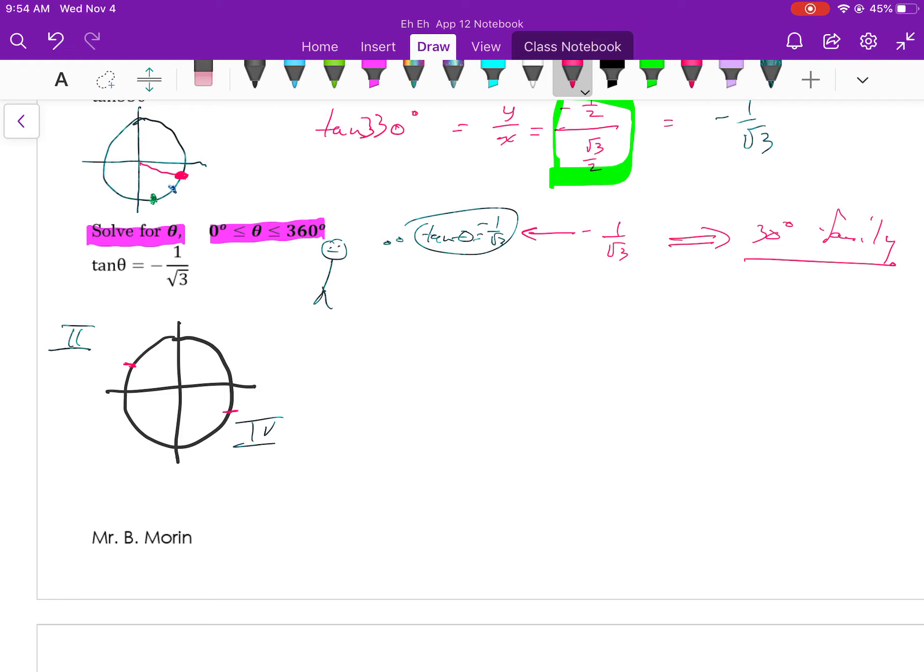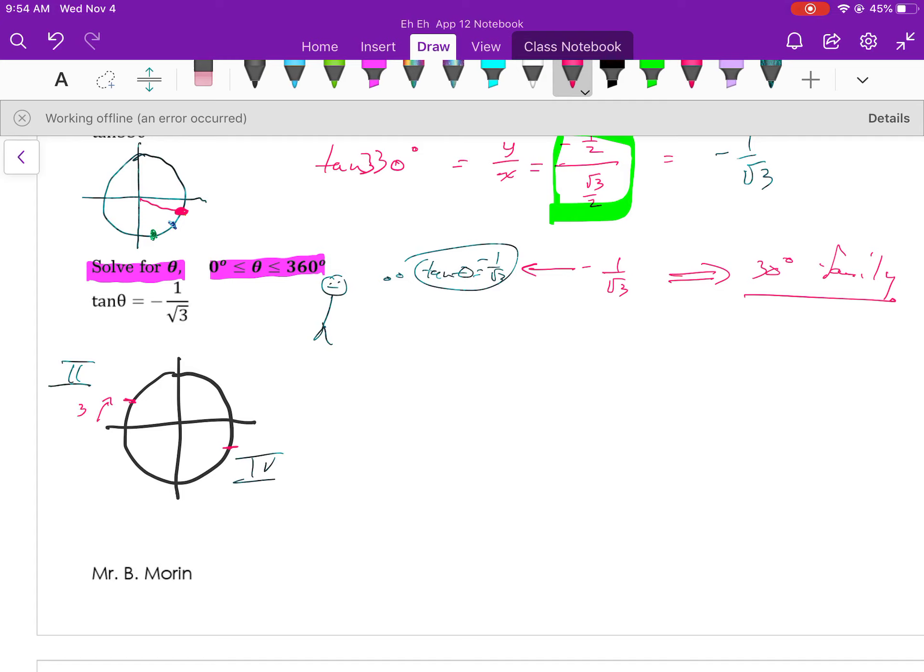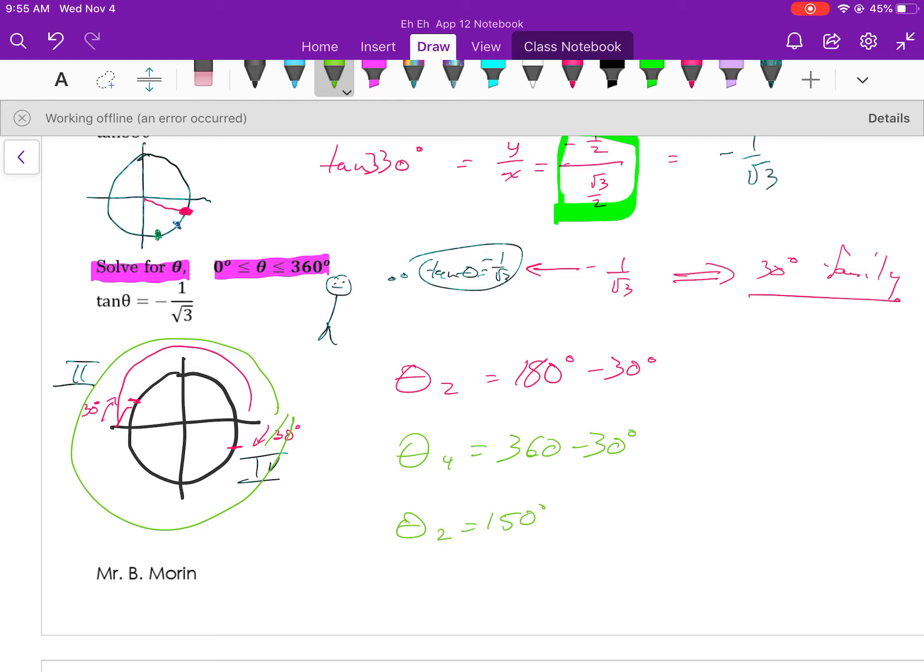I'm going to draw the related angles in quadrant 2 and 4 that are related to 30 degrees. It works wonderful, because now I know that all I have to do is go 30 degrees that way, and then 30 degrees that way to get my related angles. So my quadrant 2 angle is going to be 180 minus 30 degrees. My quadrant 4 angle is going to be 360 minus 30 degrees. So very quickly, I know that my theta 2 is going to be 150 degrees, my theta 4 is going to be 330 degrees. So therefore, theta is equal to 150 degrees comma 330 degrees.